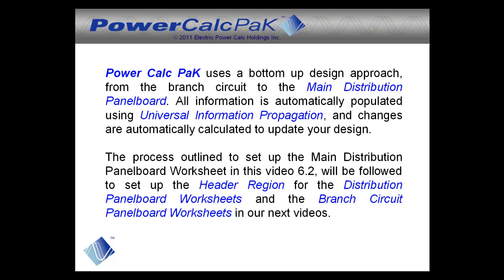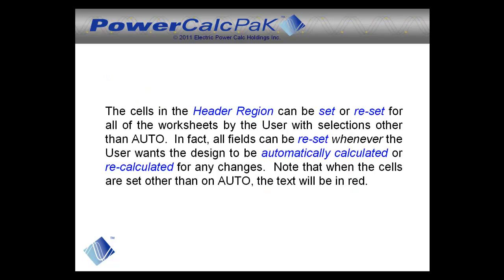The process outlined to set up the main distribution panel board worksheet in this Video 6.2 will be followed to set up the header region for the distribution panel board worksheets and branch circuit panel board worksheets in our next videos. The cells in the header region can be set or reset by the user with selections other than Auto. All fields can be reset whenever the user wants the design to be automatically calculated or recalculated. Note that when the cells are set other than on Auto, the text will be in red.